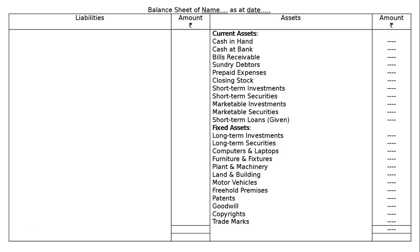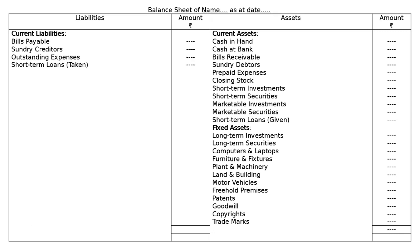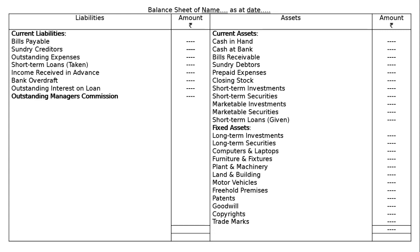After totalling the asset side, go to the liability side and start with current liabilities — matching the order used on the asset side. Under current liabilities: bills payable, sundry creditors, outstanding expenses, short-term loans taken, income received in advance, bank overdraft, outstanding interest on loan, outstanding manager's commission, and reserves or provision for bad debts.